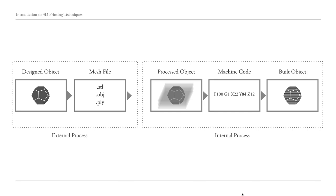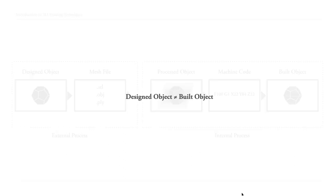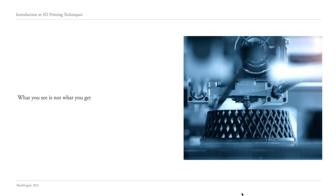One really important thing that is a little contradictory to what I said before is that while there seems to be a very direct translation from the designed object on our computer to the built object, the built object is not the same as what was designed. Because of this layering process, we inherently have differences between the monolithic entity we see on our computers and the thing that comes out on the other end. This is going to impact the mechanical properties of the object and has implications for how it behaves over time — what comes out of the machine is not a continuous monolithic object.